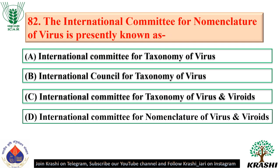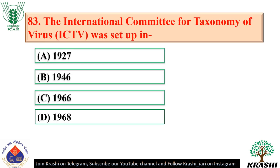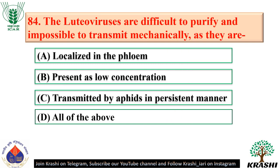Question number 82: The international committee for nomenclature of virus is presently known as the International Committee for Taxonomy of Virus — option A. Question number 83: The International Committee for Taxonomy of Virus was set up in 1966 — option C. Question number 84: Luteoviruses are difficult to purify and impossible to transmit mechanically because they are localized in the phloem, present in low concentration, and transmitted by aphids in a persistent manner — all of the above, option D.